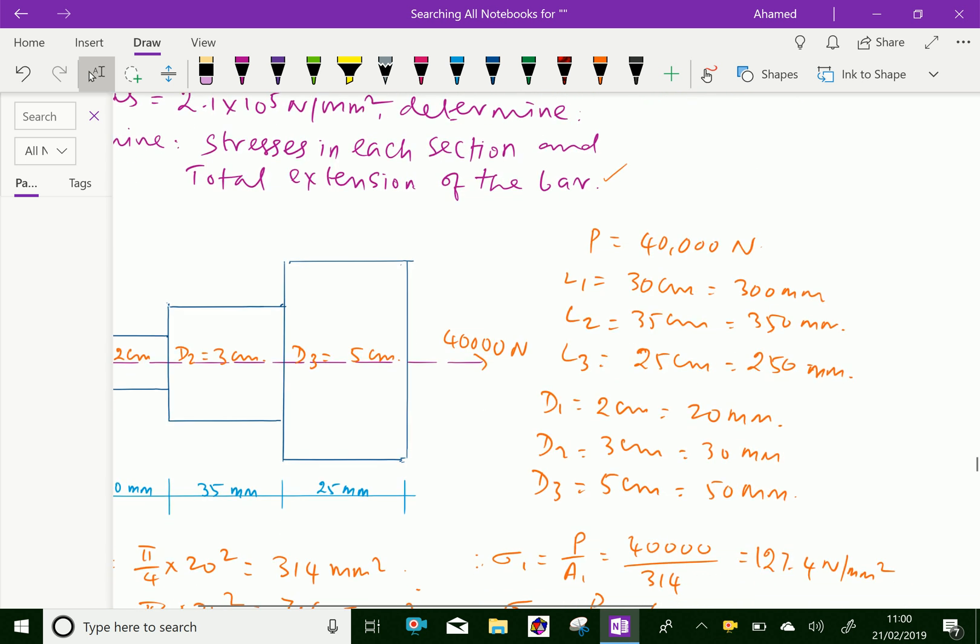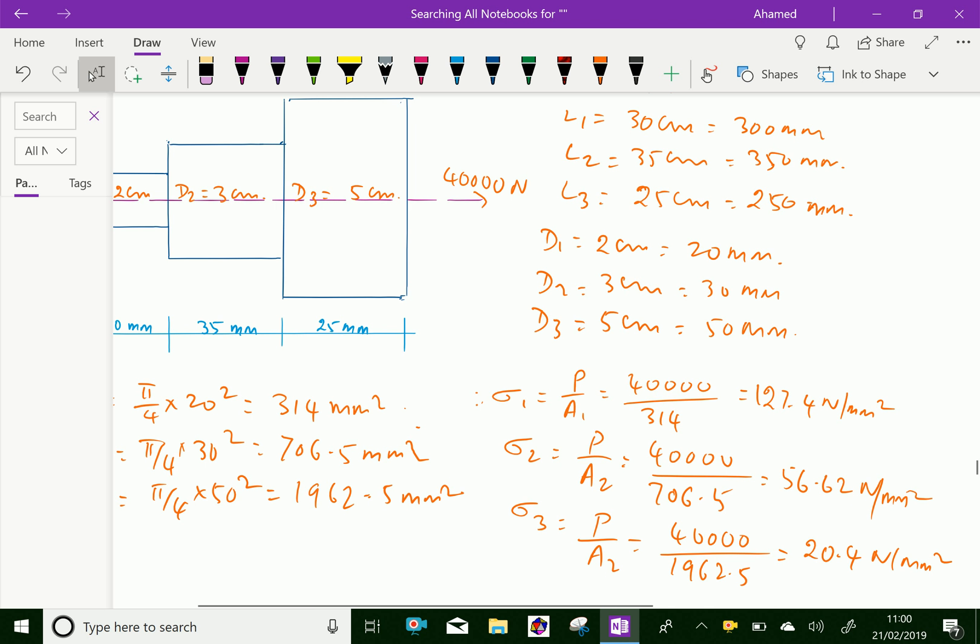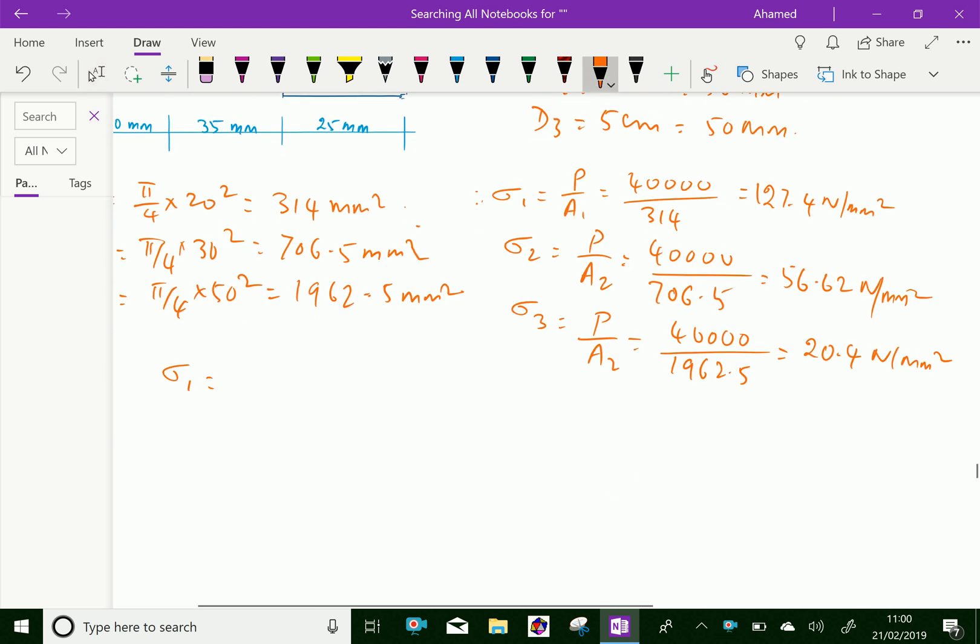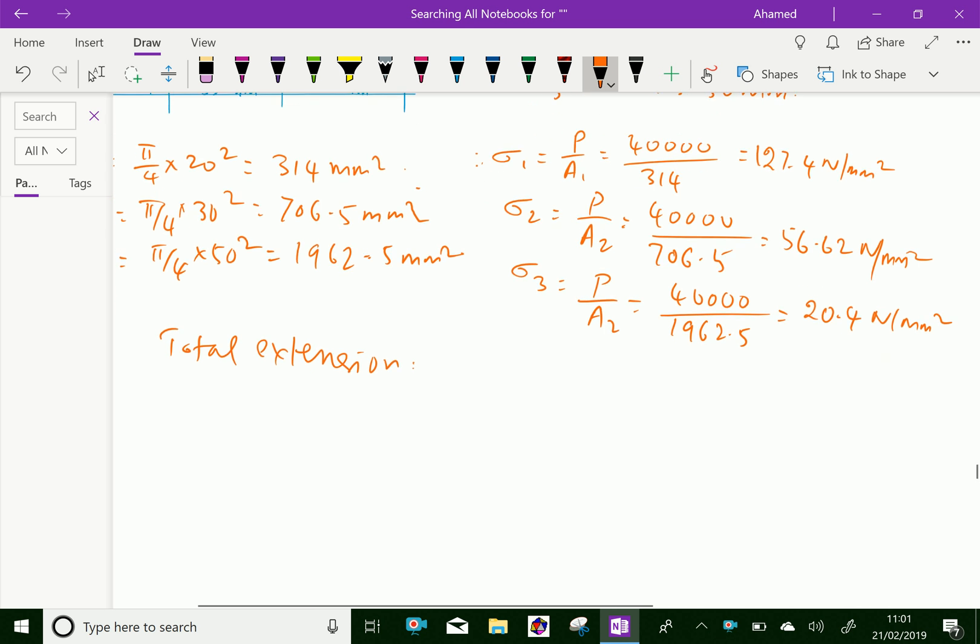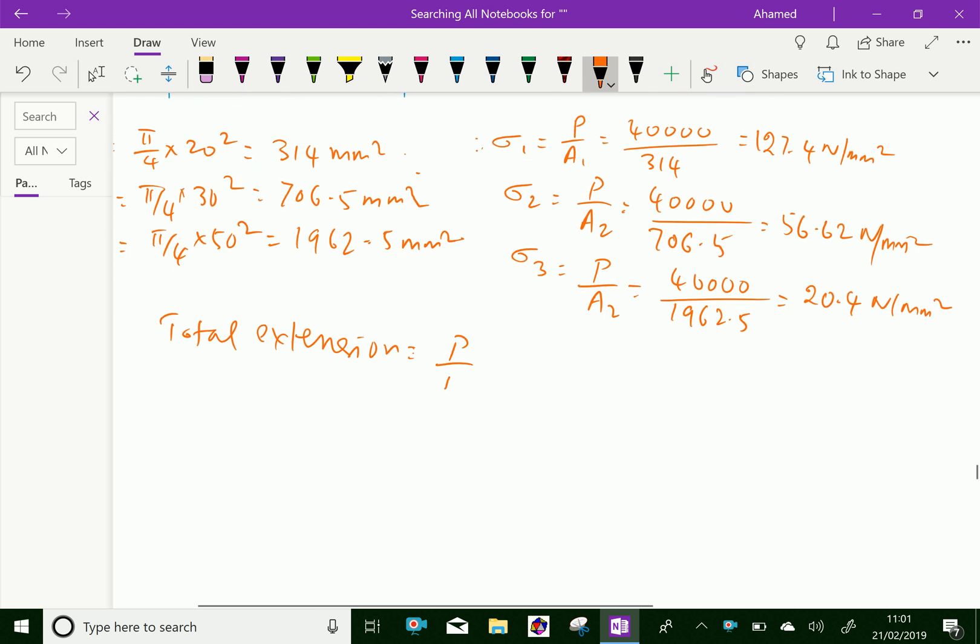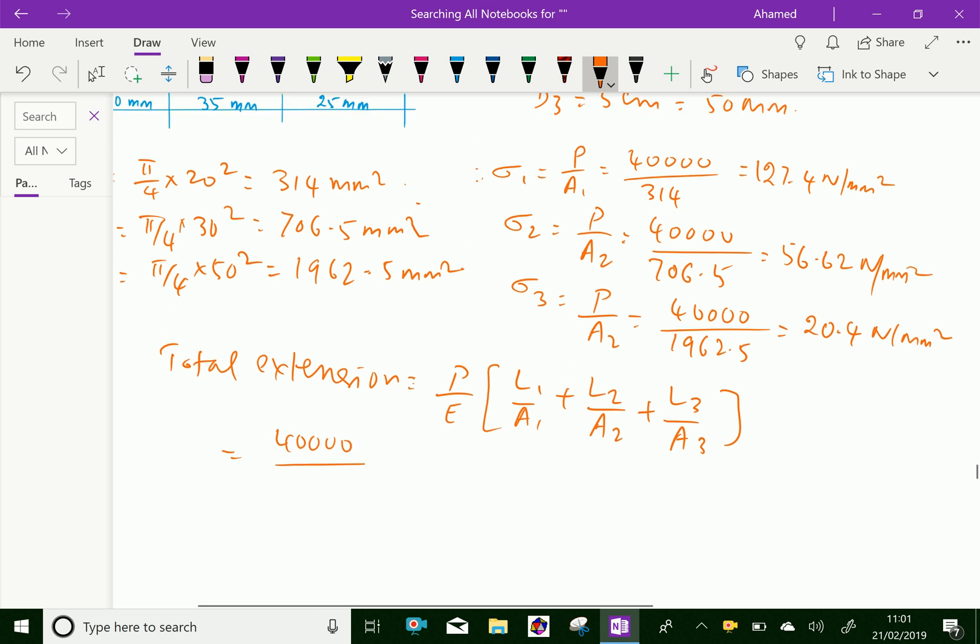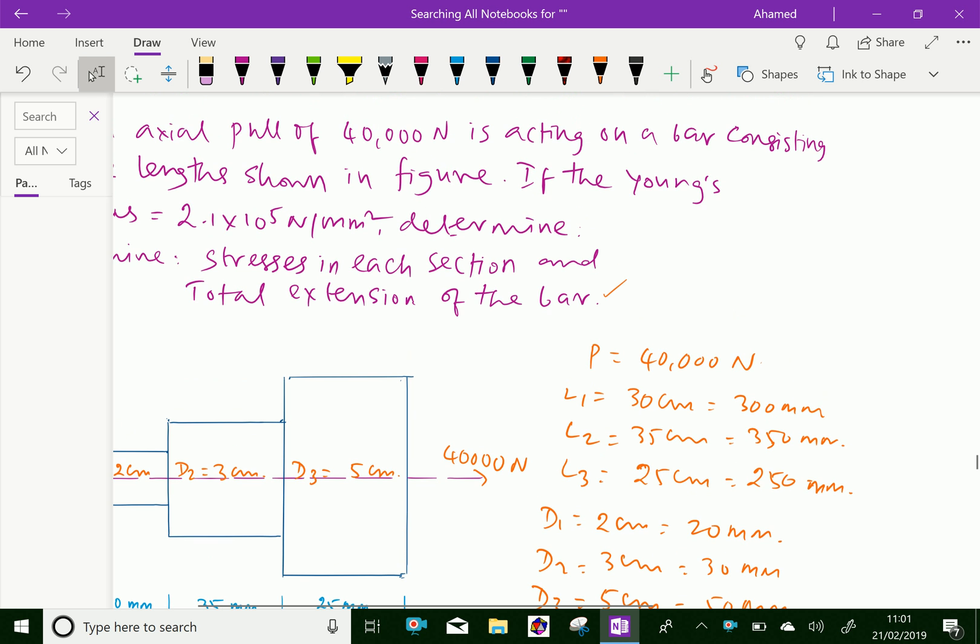Now we got stress in each section. Now you have to find total extension. We have the formula: total extension equals P by E times (L1 by A1 plus L2 by A2 plus L3 by A3), which is equal to...